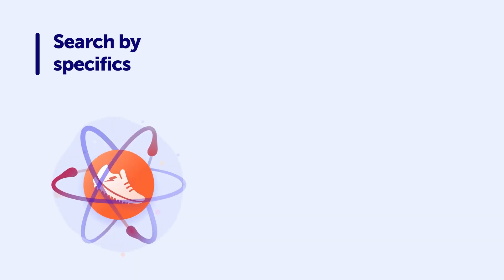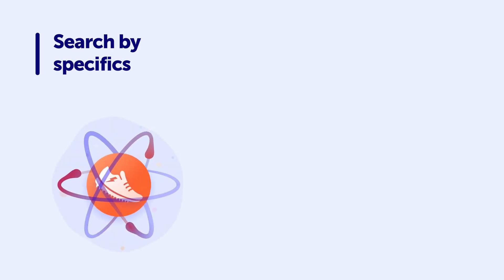In addition to the basic Confluence search syntax, it's also important to know that ScriptRunner's CQL search provides access to functions that are not available in Confluence's normal, advanced, or basic search. This means you can search by specifics like labels or favorite spaces.